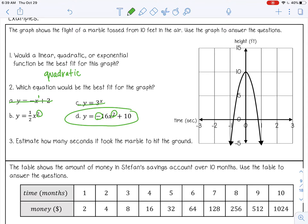Number three, estimate how many seconds it took for the marble to hit the ground. So we're looking to see when does the height reach zero? Now it reaches zero twice, but over here, this is a negative time. So really, we're just looking from here on. So it looks like about right here, and I'm going to estimate that at 0.8 seconds.